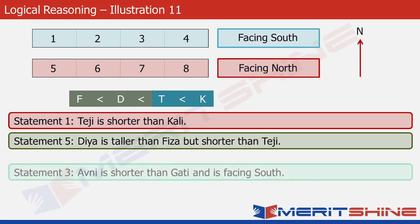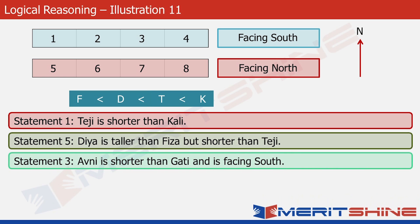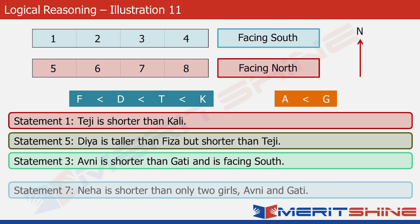Statement three says that Avni is shorter than Gatti and is facing south. Let's ignore the direction part for a while and just concentrate on the relative heights. It tells us that Avni is shorter than Gatti. We can see that neither Avni nor Gatti figures among the four girls already placed, so we have to put this information about Avni and Gatti separately. Now these are two separate blocks — one for the previous four girls, and one for Avni and Gatti showing their relative heights: A < G.